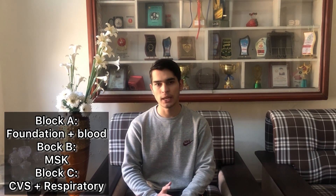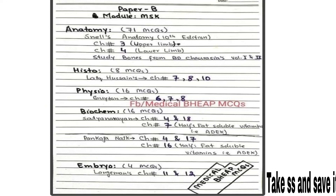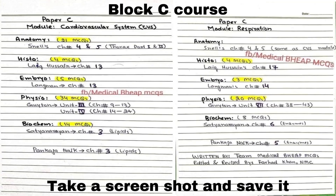In first year, there are five modules in total. Foundation and blood will be covered in Block A, MSK in Block B, and respiratory and CVS in Block C. You will have to cover five modules and appear in three papers, also called three blocks: Block A, Block B, and Block C. The credit for these pictures goes to Medical Beep MCQs page on Facebook — simply take a screenshot and save the course distribution pictures.